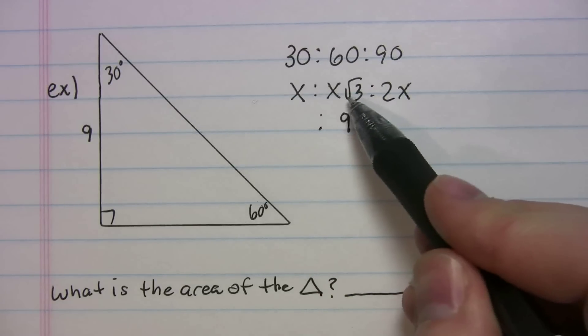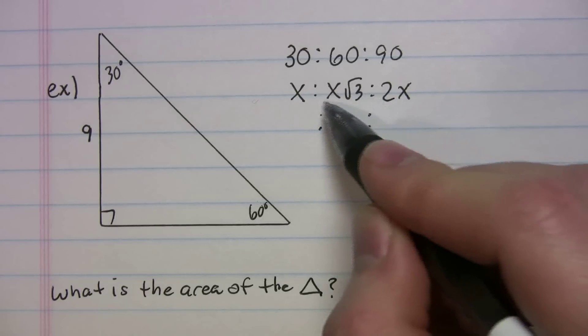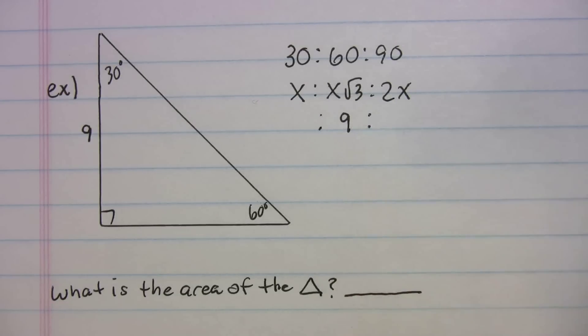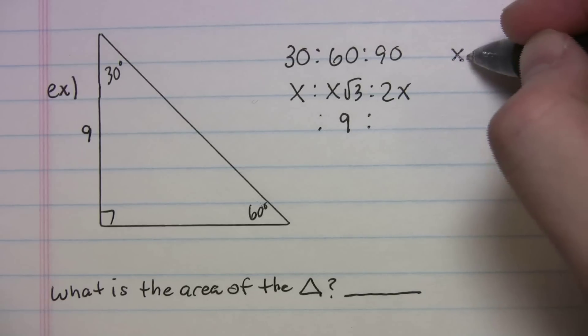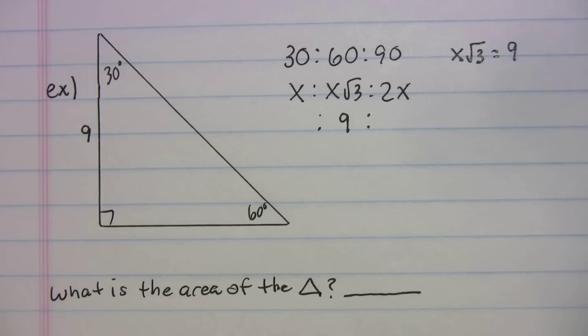So am I saying that x is equal to 9? No. You can't get confused here. That's not what I'm saying. So what I'm saying is that x radical 3, this whole thing, is equal to 9. So let's write that on the side. x radical 3 equals 9.